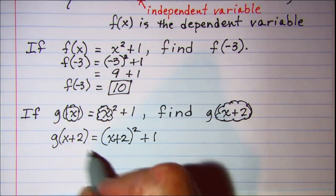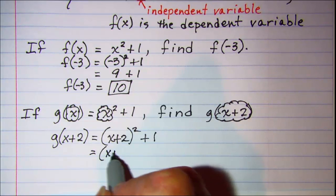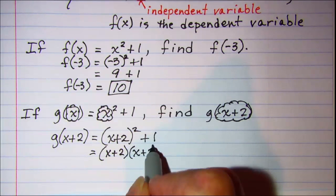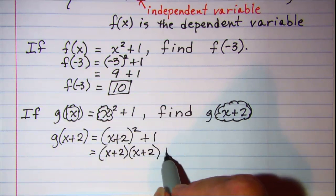Now we need to square this binomial so that means multiply it by itself. And then we have plus 1 on the end.